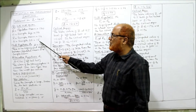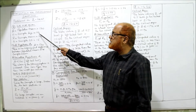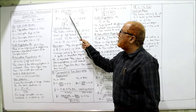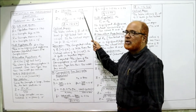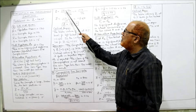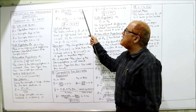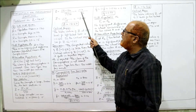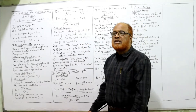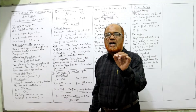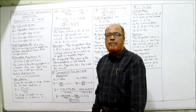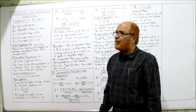Divided by small s is 15, divided by root n. n is 100, so root of 100 is 10. So 116 minus 120 is minus 4, and 15 divided by 10 is 1.5. So Z is equal to minus 2.67. This is the computed value of Z and it should be compared with the critical value.